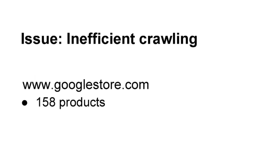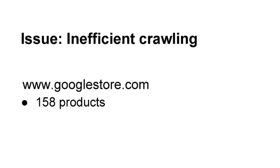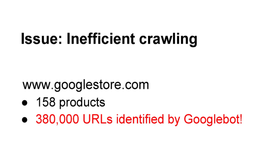In 2010, the Google Store only sold about 160 products, and that seems fine and fairly easy to crawl. But of these 160-ish products, it actually created 380,000 URLs. These URLs were created by things like different types of navigation. So Googlebot, in terms of crawling your site, doesn't just look at say 200 unique URLs, but actually has to determine what URLs to crawl of the 380,000 that were created.